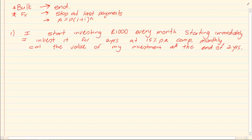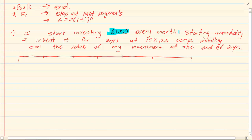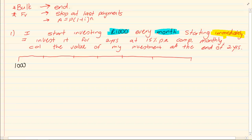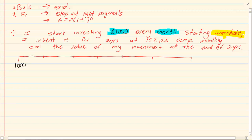If you take a timeline and you say that you are investing a thousand rand — so you are starting to invest a thousand rand every month — look at what is important: I'm starting immediately. So I'm going to make a deposit right now. It's the first of January and I'm making a deposit right now. Then I invest for two years at 15% per annum compounded monthly, which means end of January, end of February, basically investing every end of the month till the end of the two years.